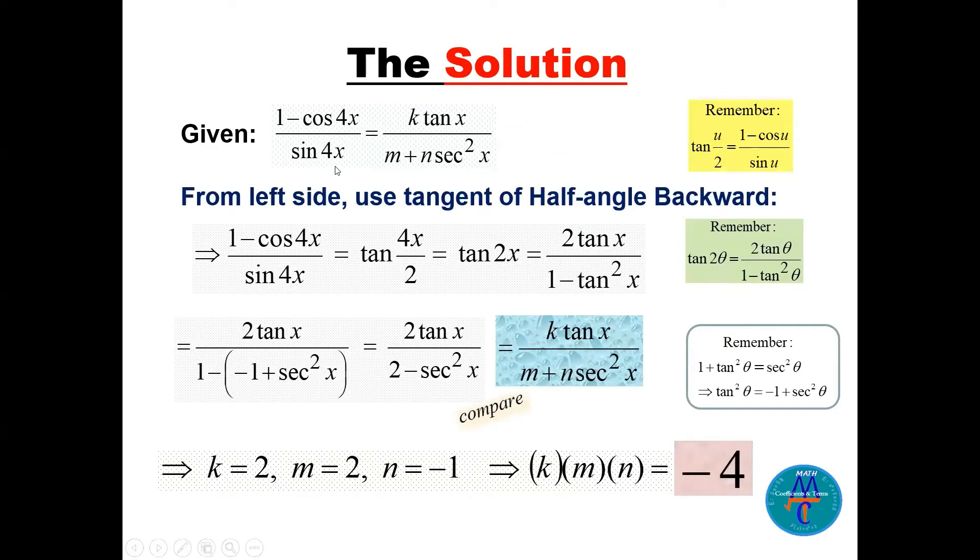Now we start with the left side and we can see that the left side is a tangent of half angle backward, because we know 1 minus cosine u divided by sine u is exactly tan u over 2. So this is 1 minus cos 4x, where 4x is like u. Now the left side we can write it as tan